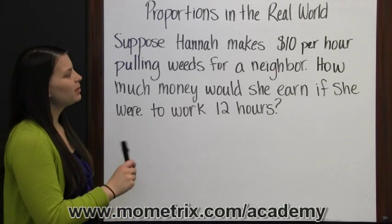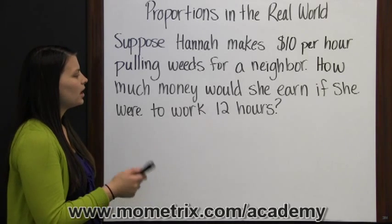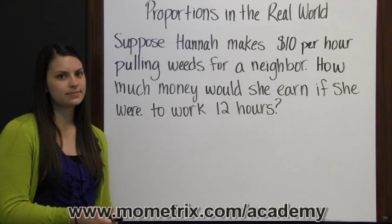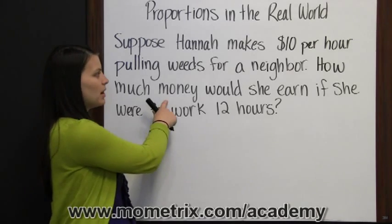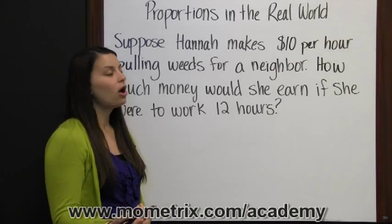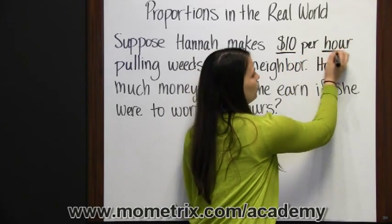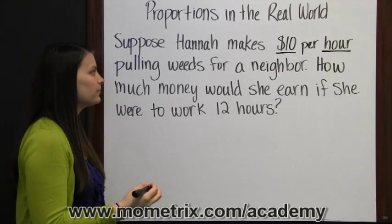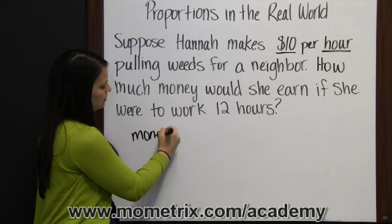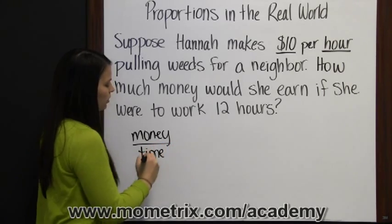Let's look at this problem. Suppose Hannah makes $10 per hour pulling weeds for a neighbor. How much money would she make if she were to work for 12 hours? What we're trying to determine is how much money she would make if she worked 12 hours. The information we already have is that she's going to make $10 by working one hour — $10 per hour. We could set up a proportion with the amount of money she makes divided by the hours spent working.